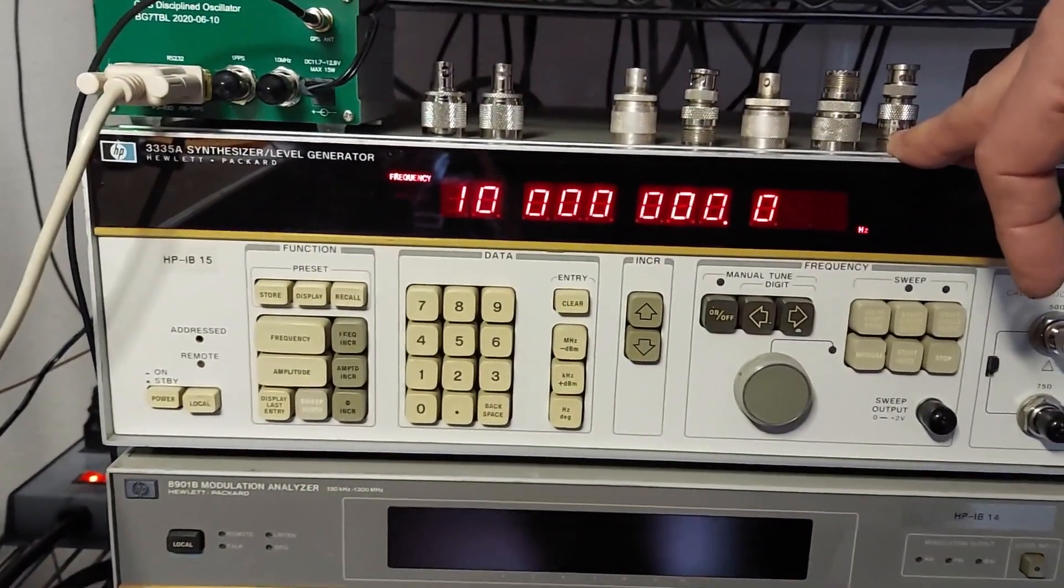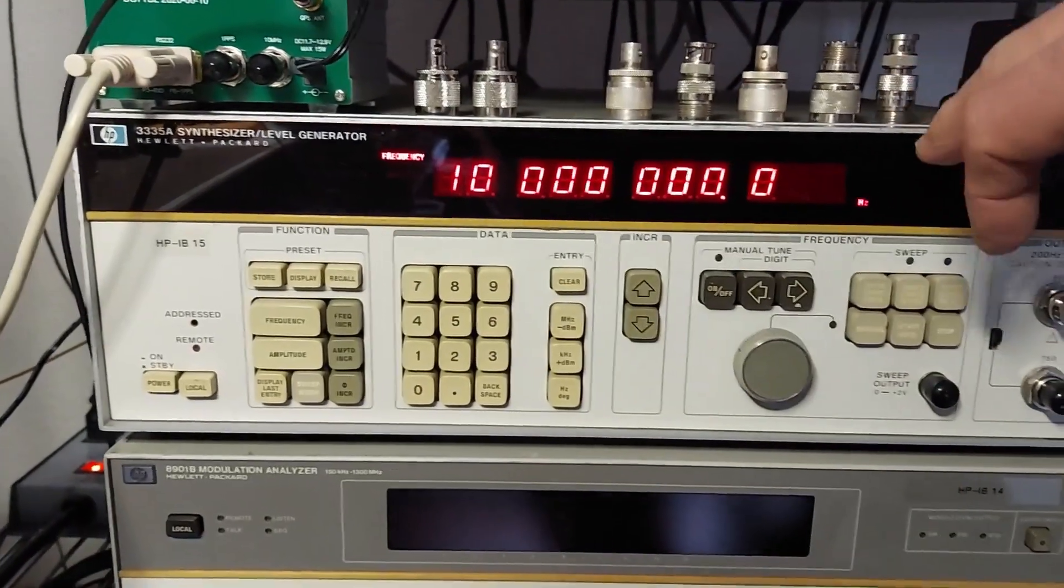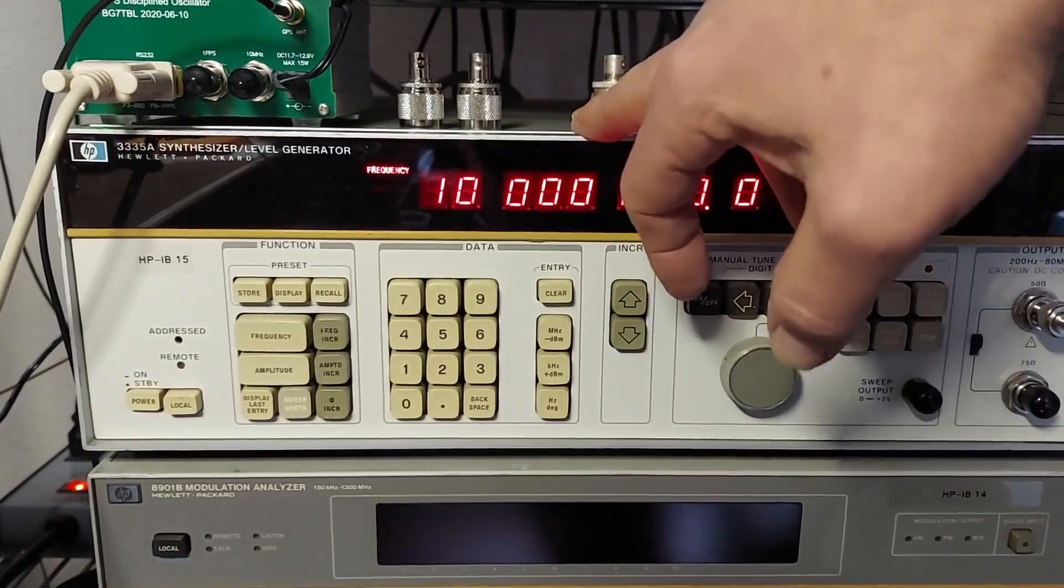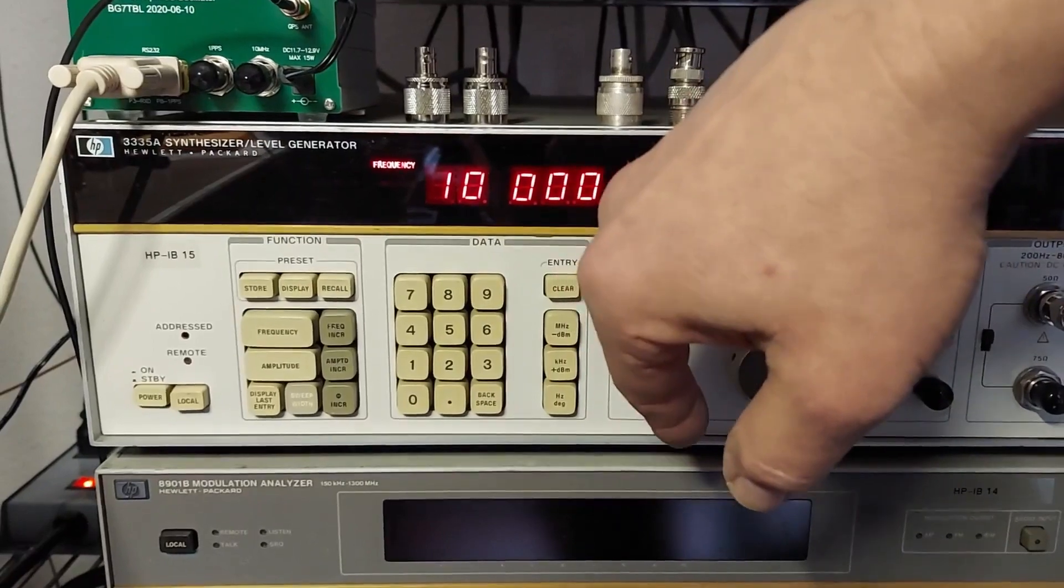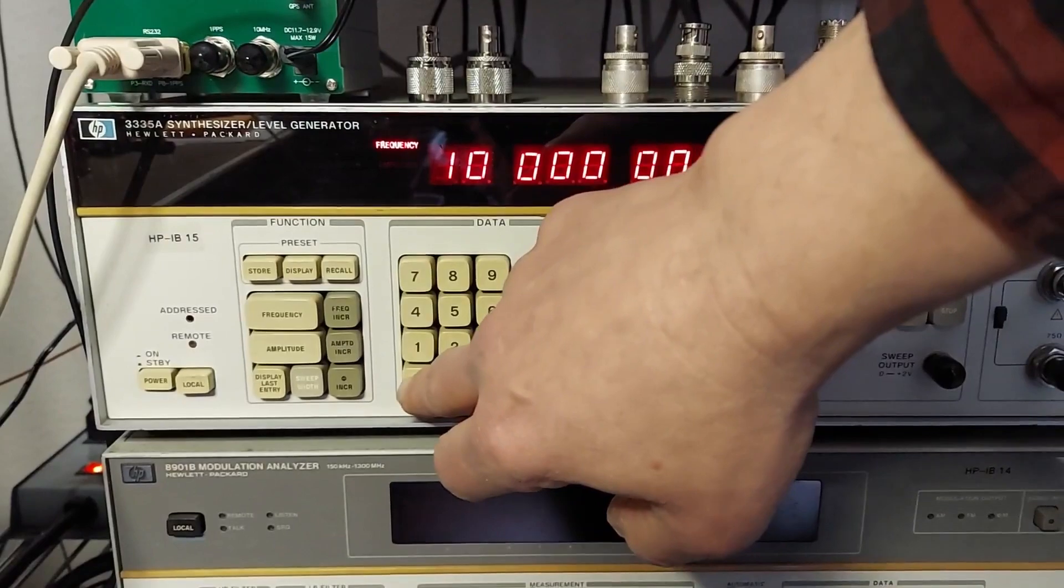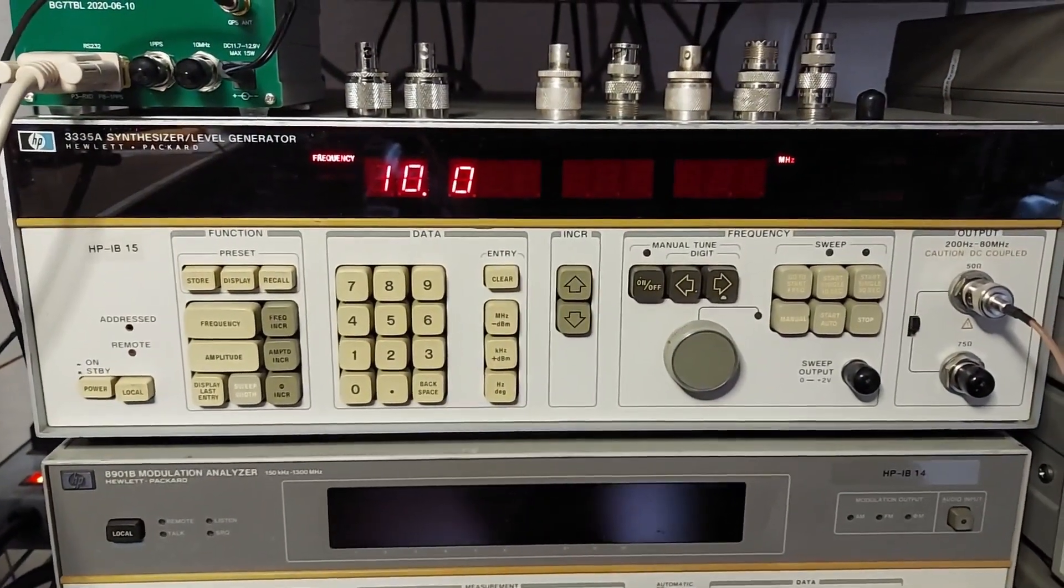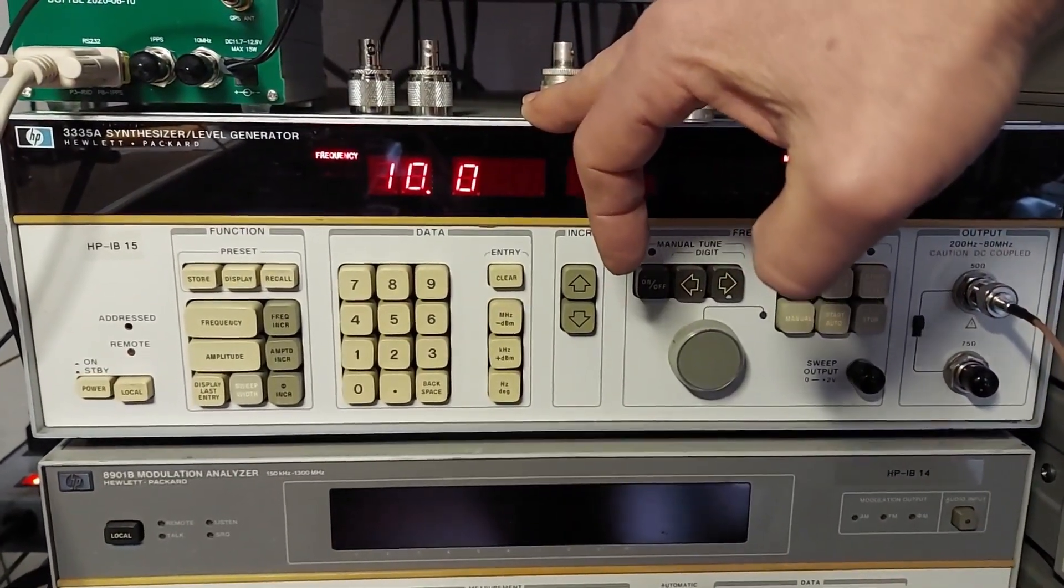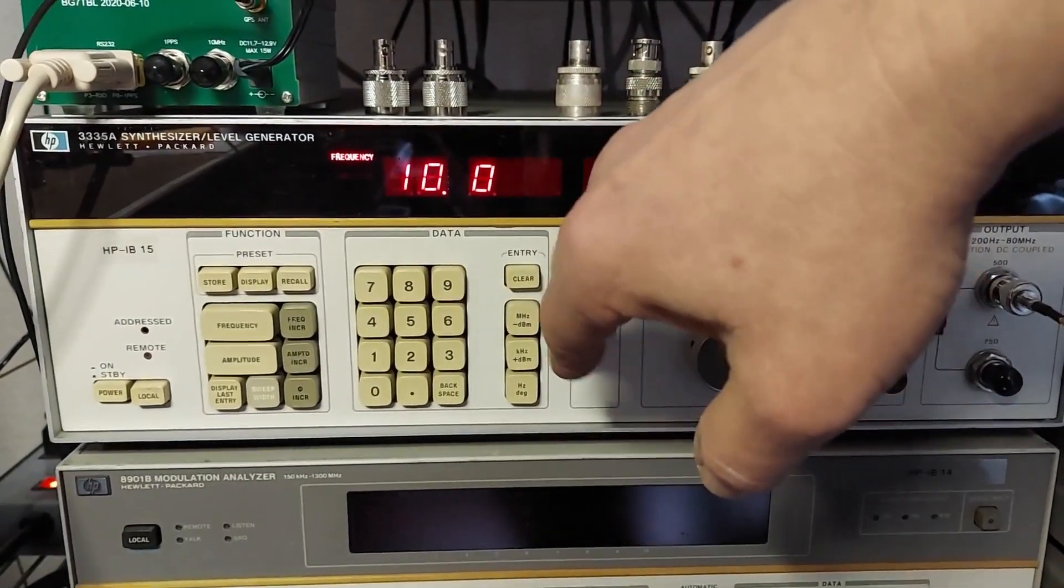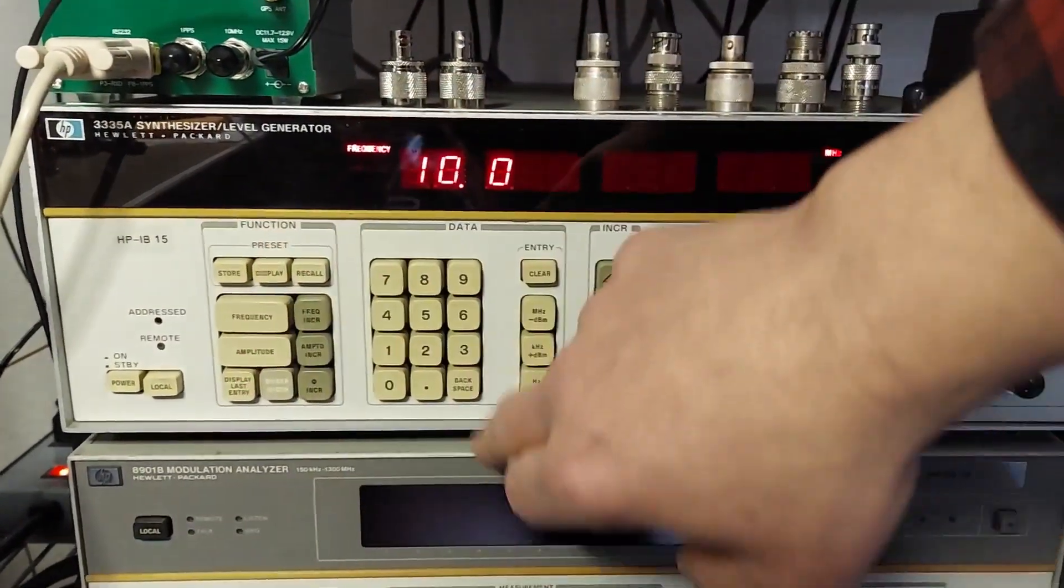When you set presets it will store - you have 10 registers 0 through 9 - and it will store all of the operational parameters. So say I want to recall register 0, I press recall 0 and all the parameters I had set in there are right back where they were. Now if I want to display the parameters of a particular preset but I don't want it to take effect, then I press the display button.